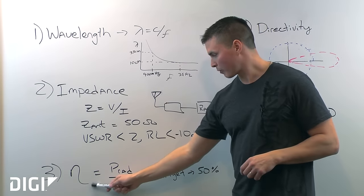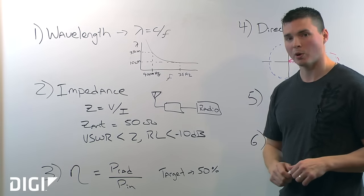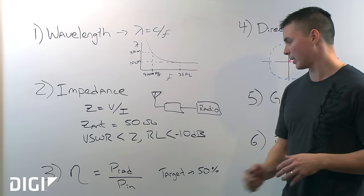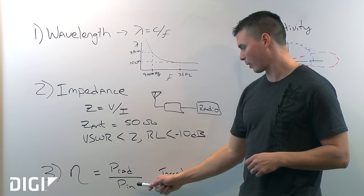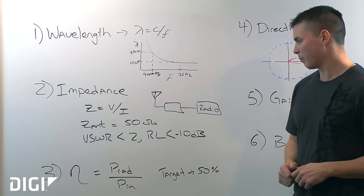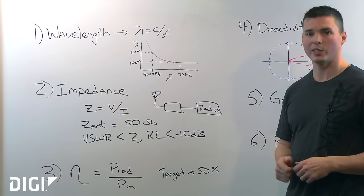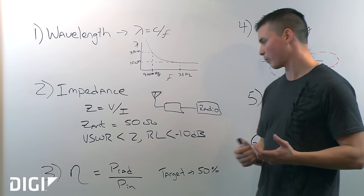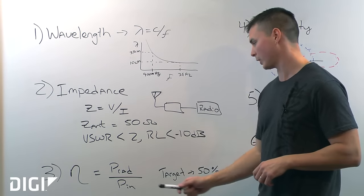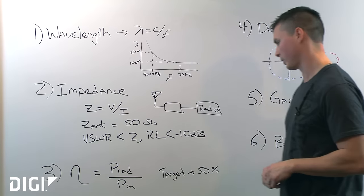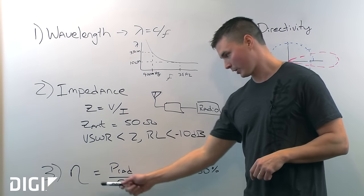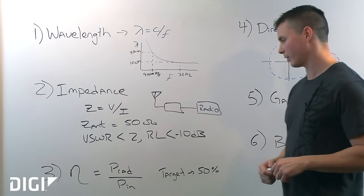Antenna efficiency is by far the most important antenna parameter for these small wireless embedded devices. It's defined as the power radiated over the power input to the antenna. Basically, the higher the antenna efficiency, the better the antenna. Think more bars on your cell phone. This is a really key parameter that you want to look for in these data sheets. If the data sheet does not mention the efficiency of the antenna, find another data sheet.